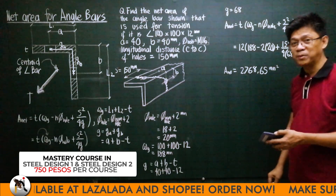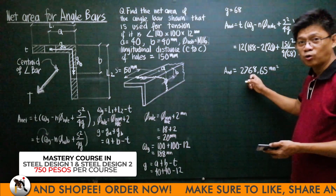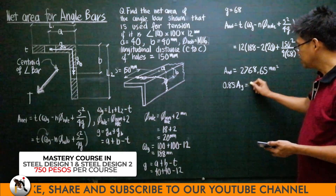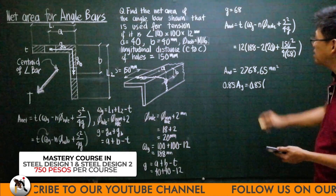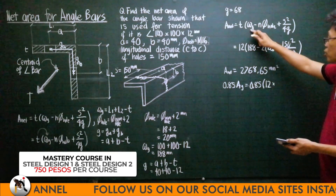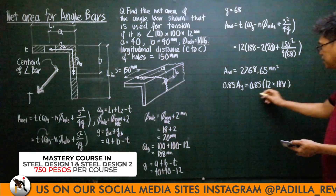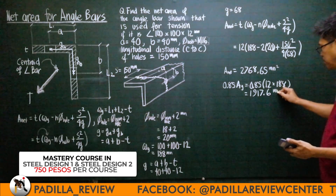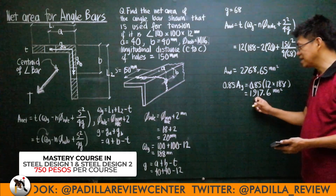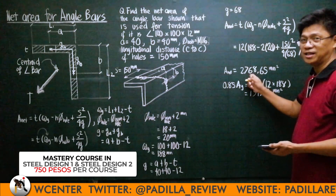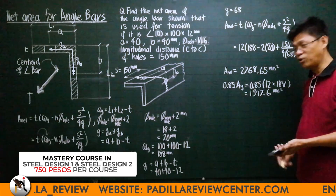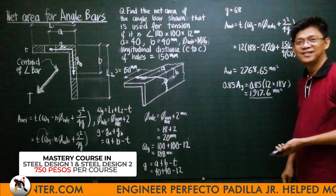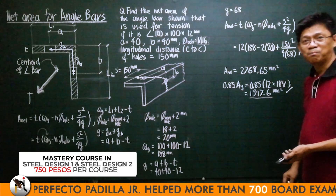Remember, in the computation of effective area you must also compare it with the value of 85% of the gross area. So 0.85 times the thickness (12) times the gross width (188) gives 1917.6 mm². Take note that the net area of 2768.65 mm² is more than this limit, so the net area cannot exceed 85% of the gross area. Therefore, between the two values, 1917.6 mm² will govern.